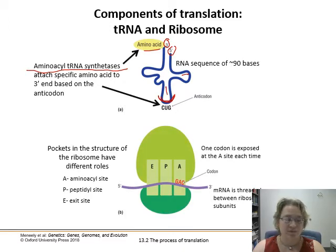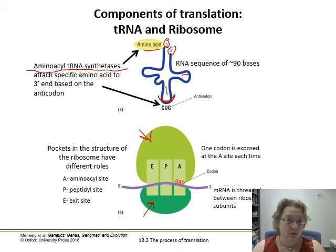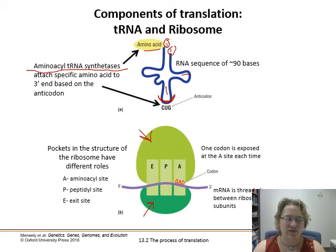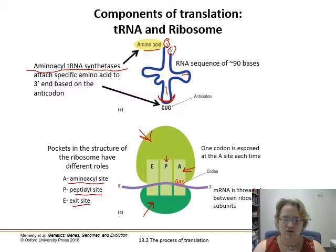Our other tool here is the ribosome. We've got two subunits — a major subunit and a minor subunit, the smaller one. They have different molecular weights, and that's how they're referred to between eukaryotic and prokaryotic ones. There are little pockets in the ribosome with three different sites for three different purposes: the aminoacyl site (A), that's where things enter; the peptidyl site (P), where the peptide bond is formed; and finally the exit site, where the uncharged tRNA leaves the ribosome. One codon is exposed at the aminoacyl site each time, and the mRNA is threaded between these subunits as the chain grows.